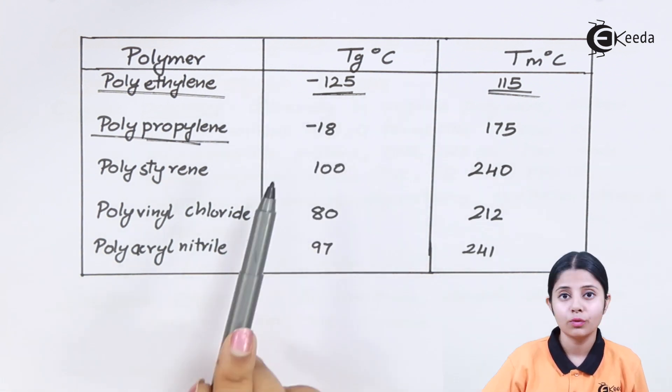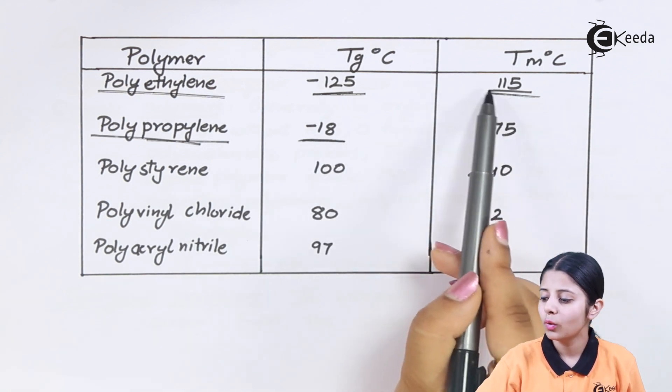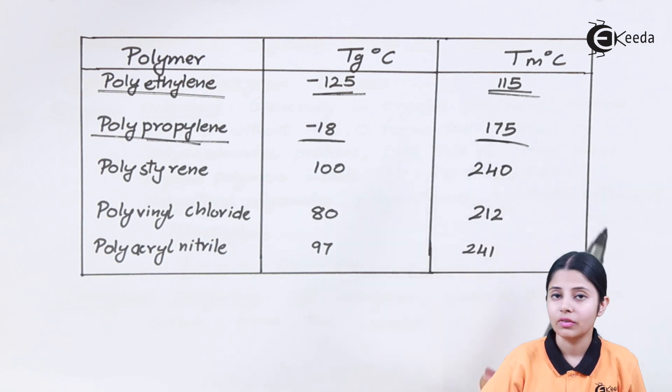Over here I have minus 125 for Tg. Over here I just have minus 18 for Tg. And for Tm I have 115, and over here for Tm I have 175.